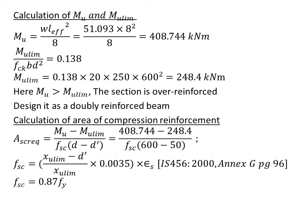This formula is in the IS code Annexure G page 96. fsc is calculated by two formulas: first is ((Xu limit - d')/Xu limit) × 0.0035 × Es, where Es is 2×10⁵, and Xu limit is the maximum neutral depth. The other formula is fsc equals 0.87fy. To calculate Xu limit, we know that Xu limit/d equals 0.48, given in the code IS456:2000 Clause 38.1 page 70.